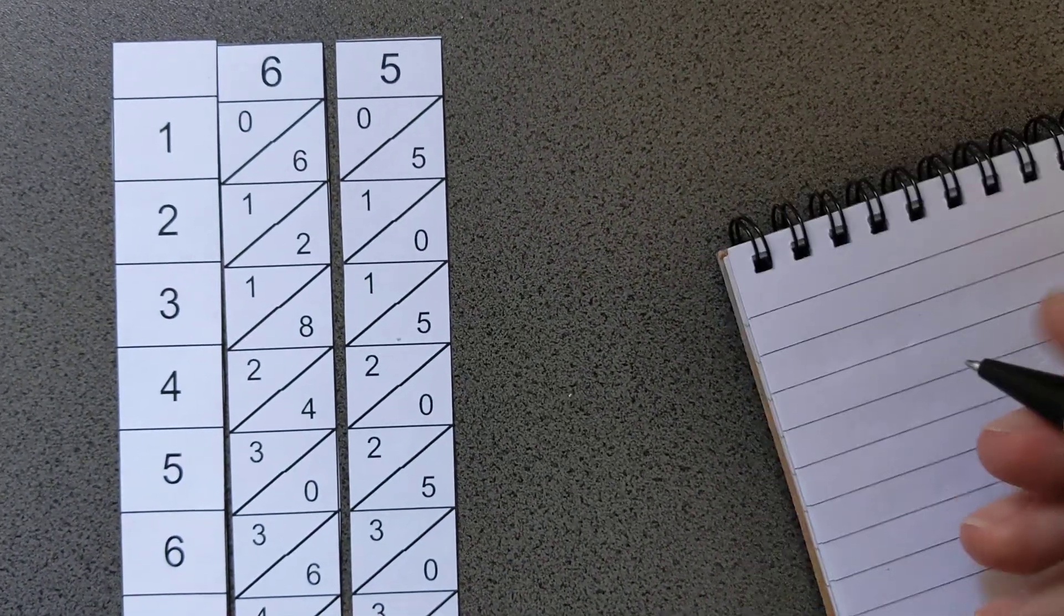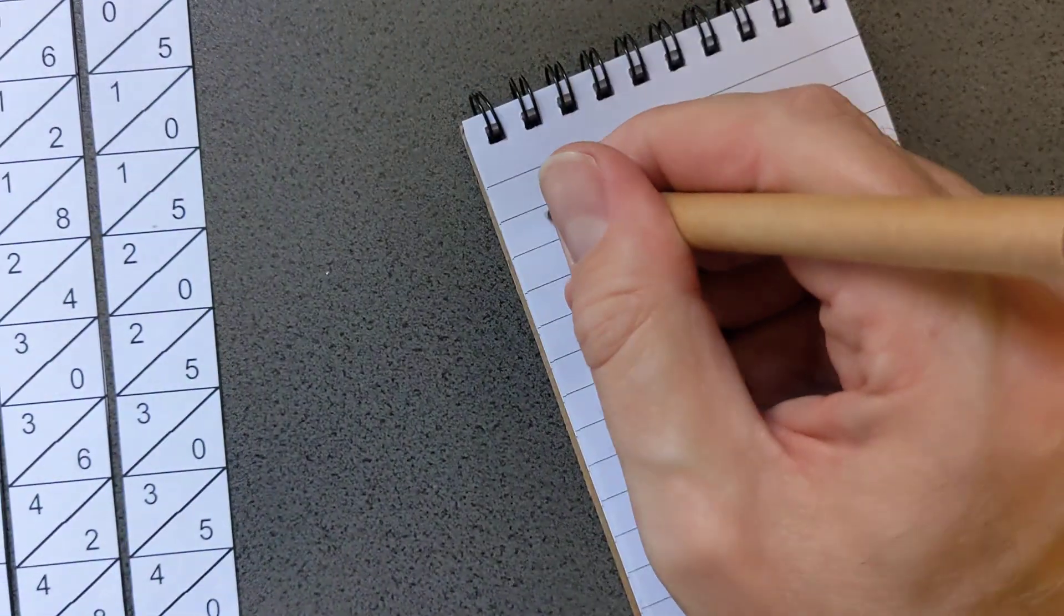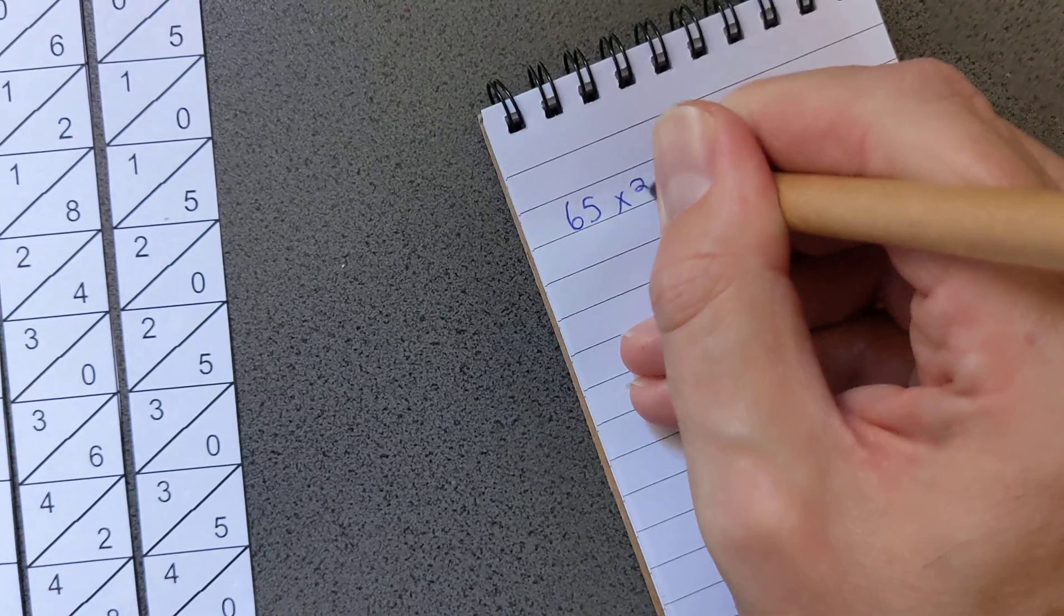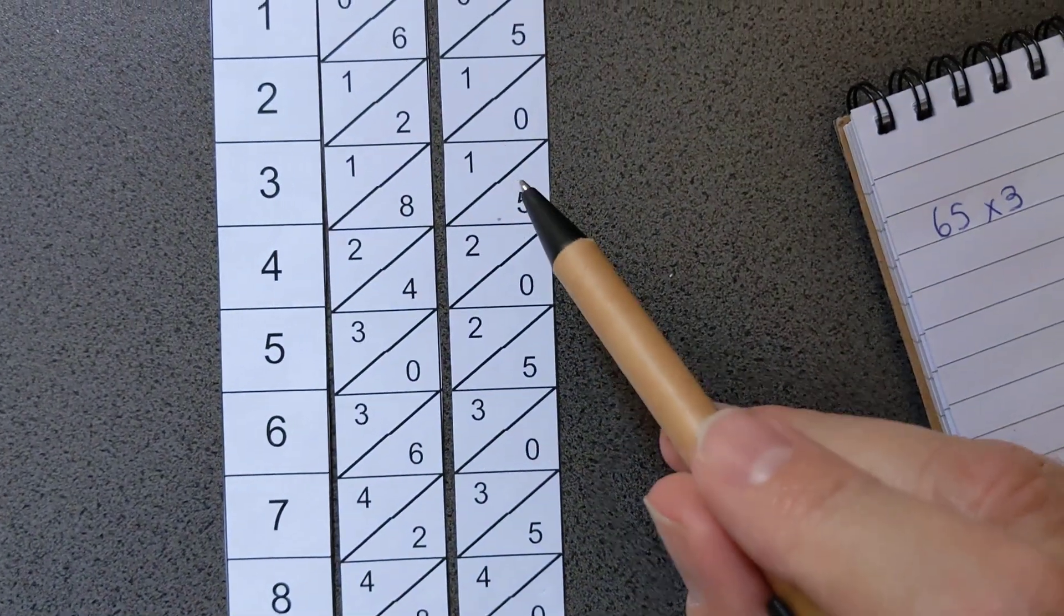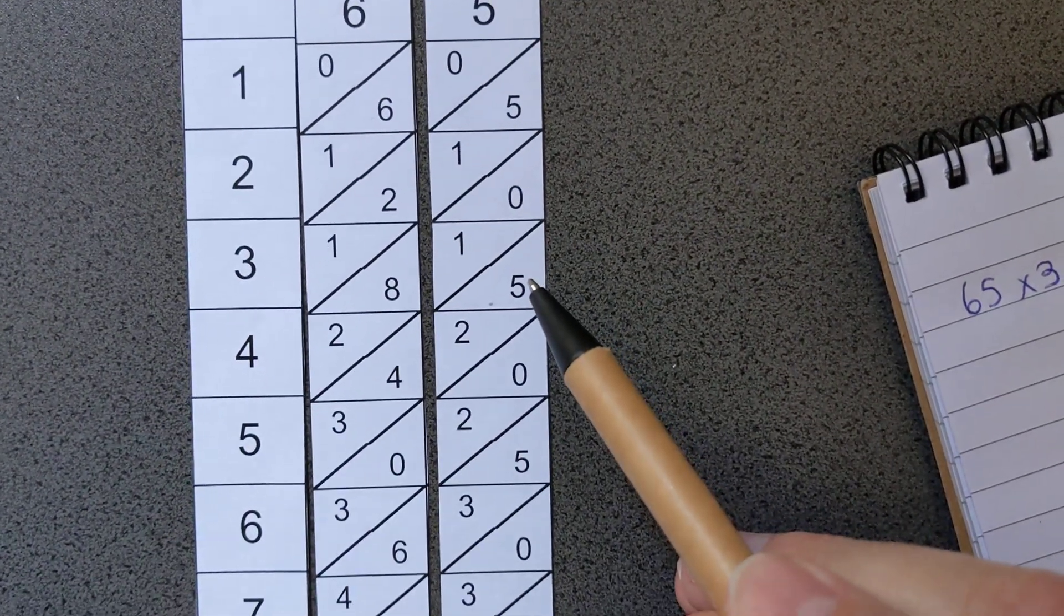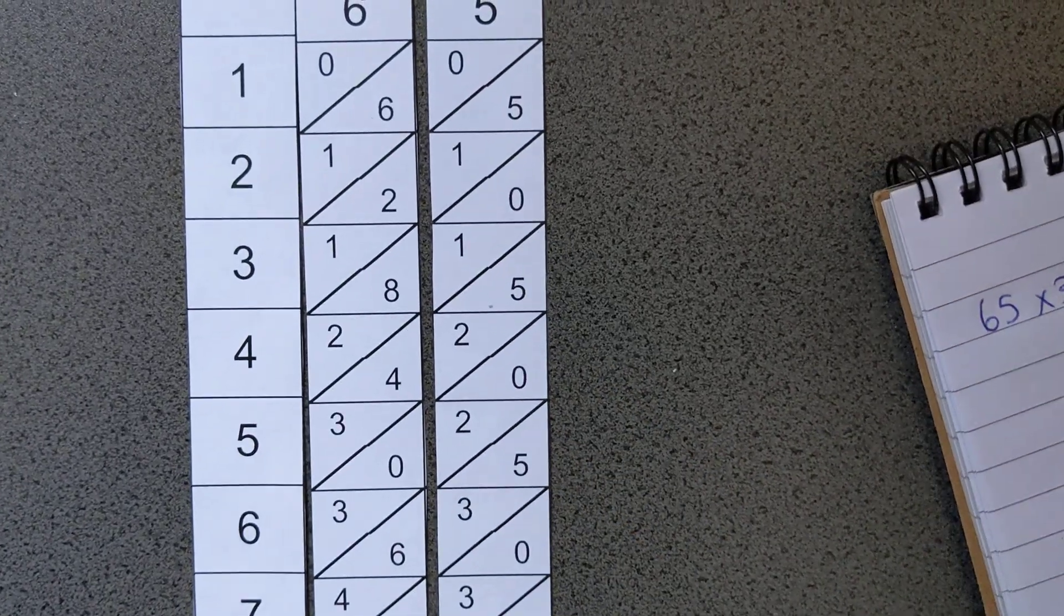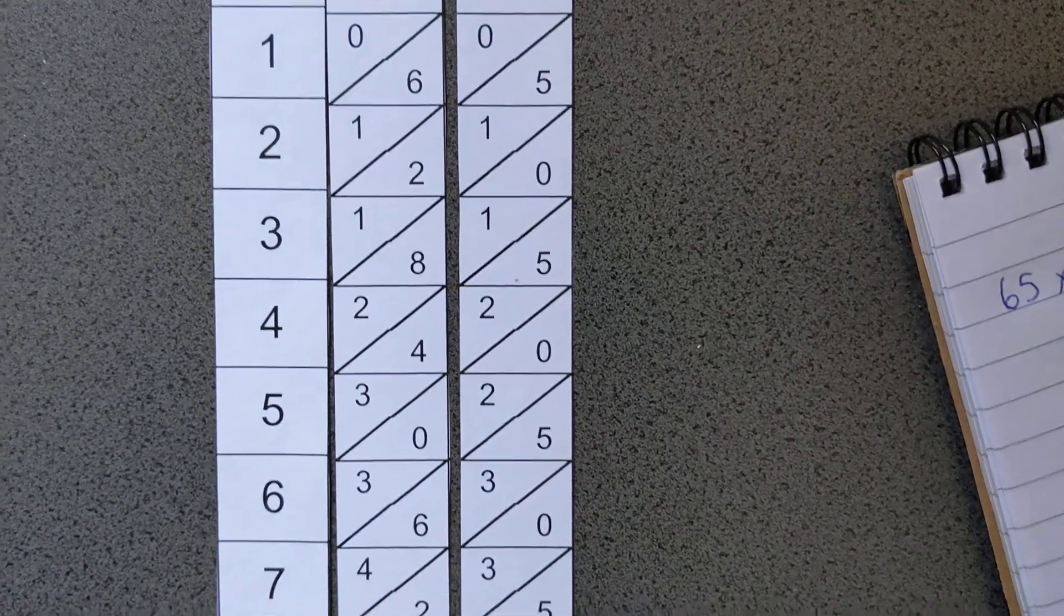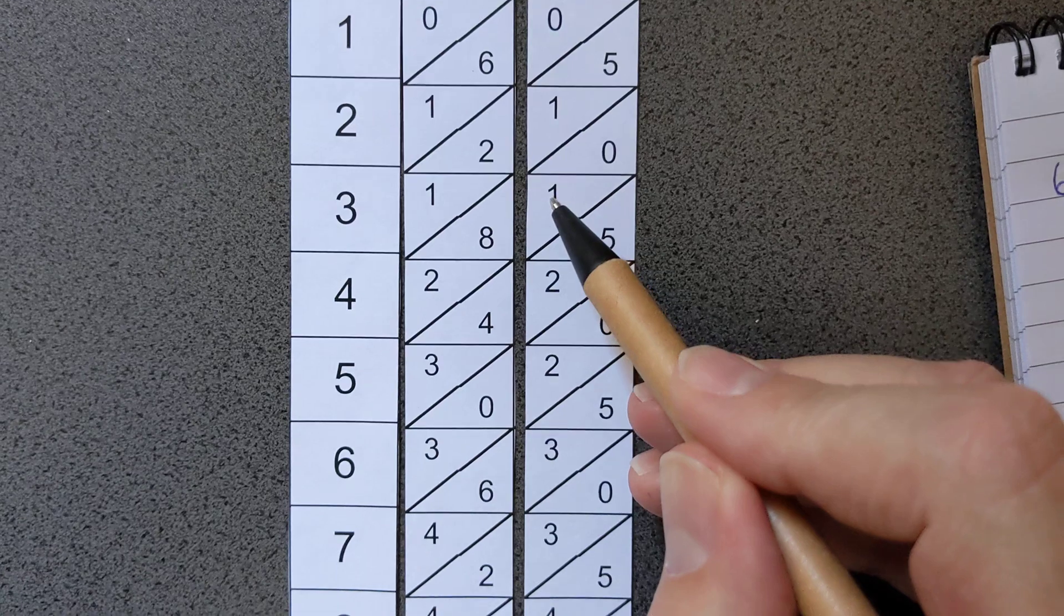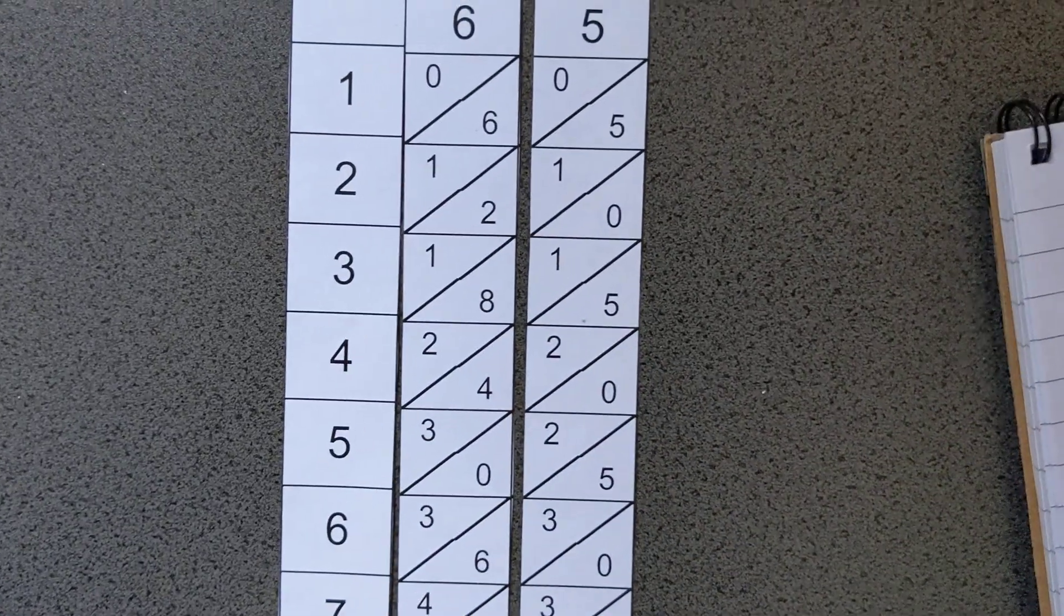So to write this down, 65 times 3, we start, probably easier to start on the right-hand side like when we're adding in case we need to carry, but in this case we don't.